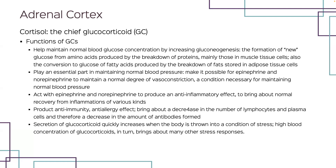In addition to maintaining normal blood glucose concentration, glucocorticoids such as cortisol also play an essential part in maintaining normal blood pressure. They act in a complicated way to make it possible for the two hormones secreted by the adrenal medulla to partially constrict blood vessels, which is necessary for maintaining blood pressure. Glucocorticoids also work with adrenal medulla hormones to produce an anti-inflammatory effect, bringing about normal recovery from inflammation produced by many different kinds of agents. The use of cortisone to relieve skin rashes, for example, is based on this anti-inflammatory effect. Another effect produced by glucocorticoids is their anti-immunity and anti-allergy effect, bringing about a decrease in the number of certain cells that produce antibodies.